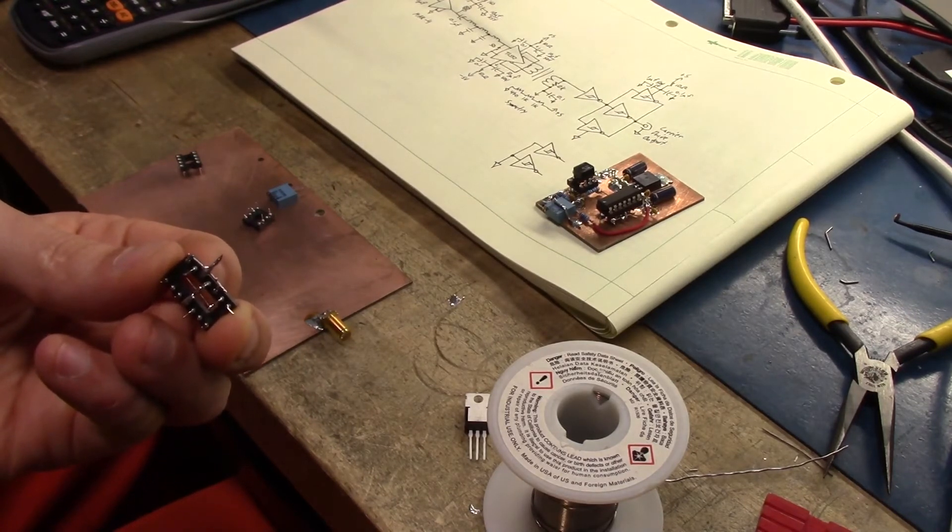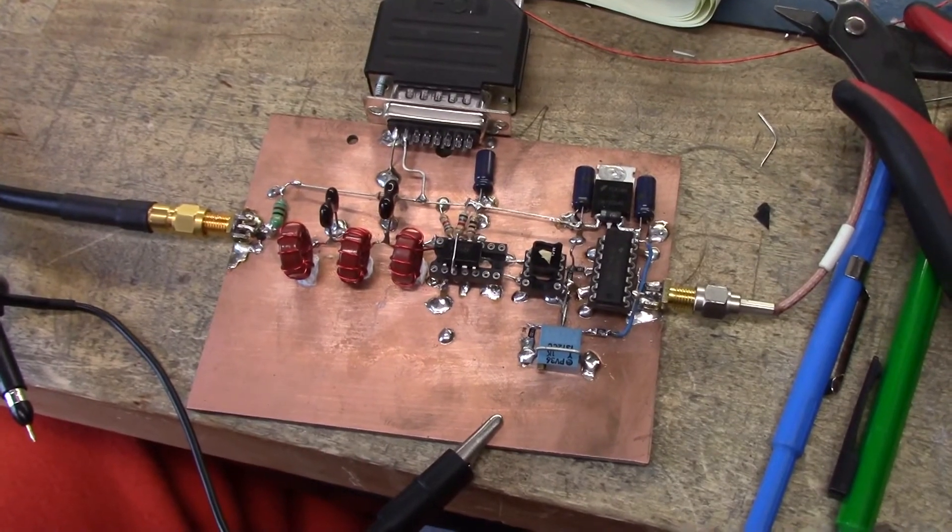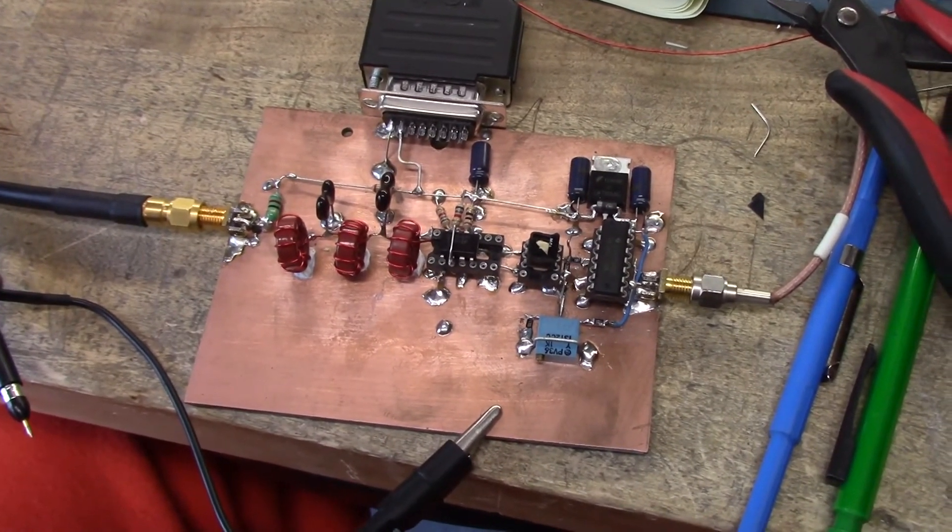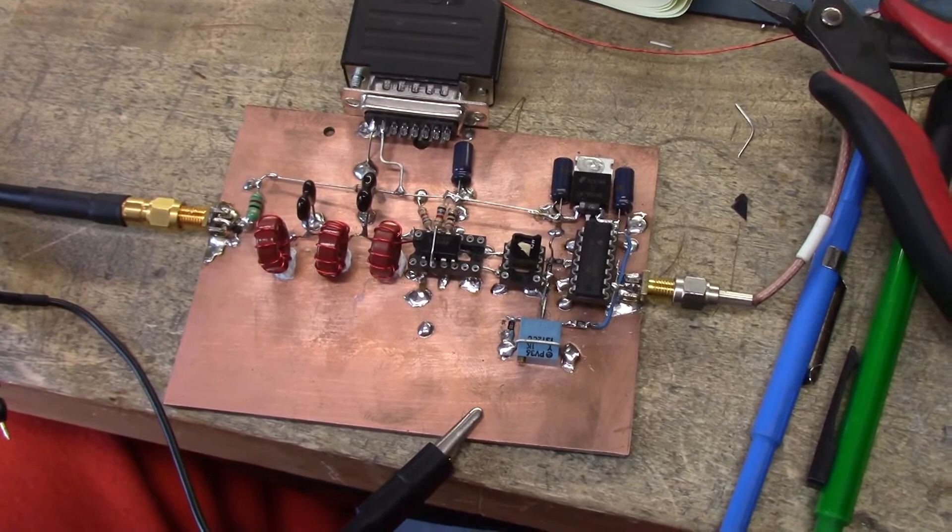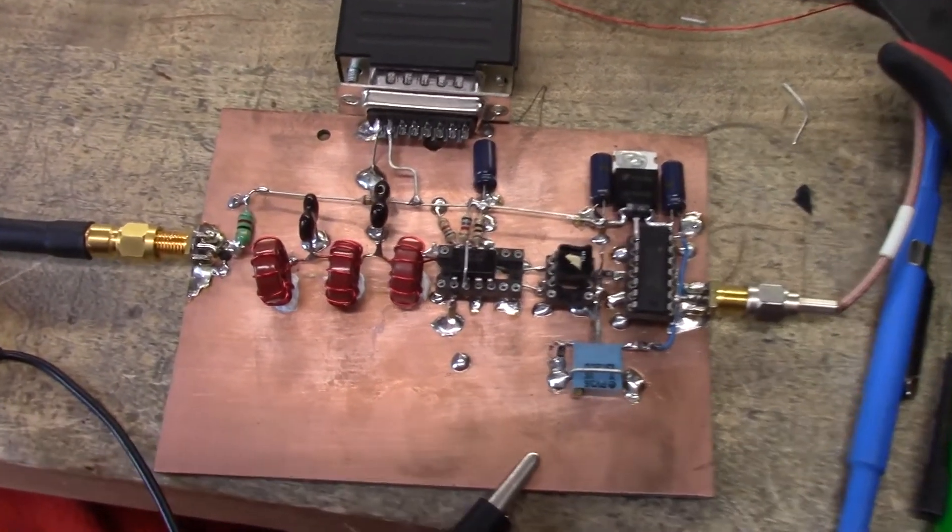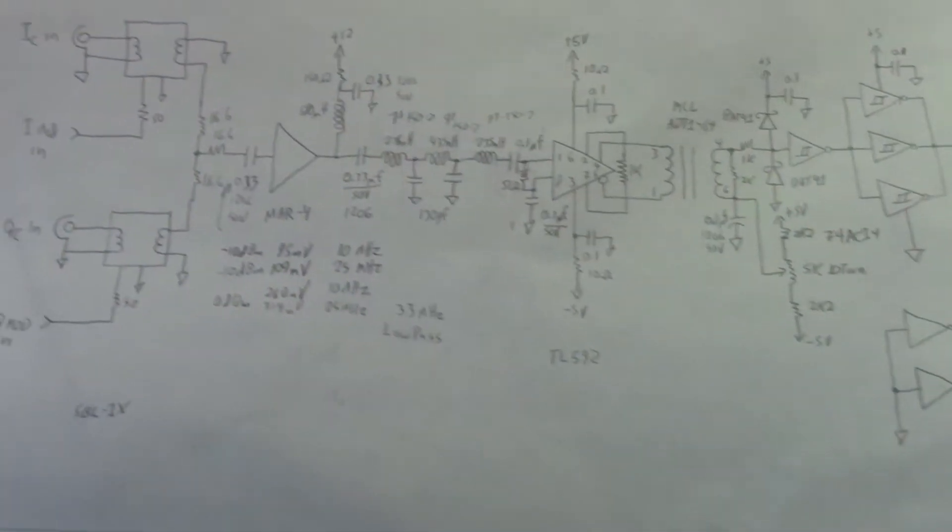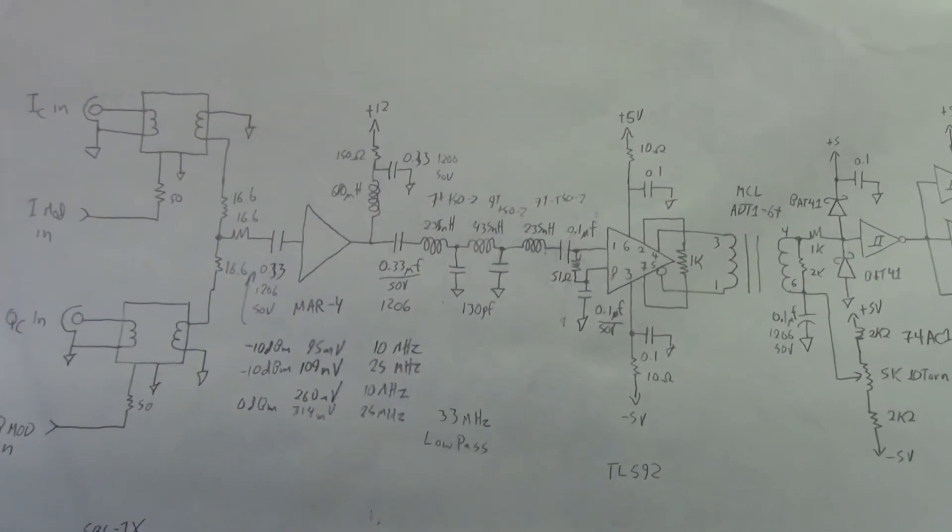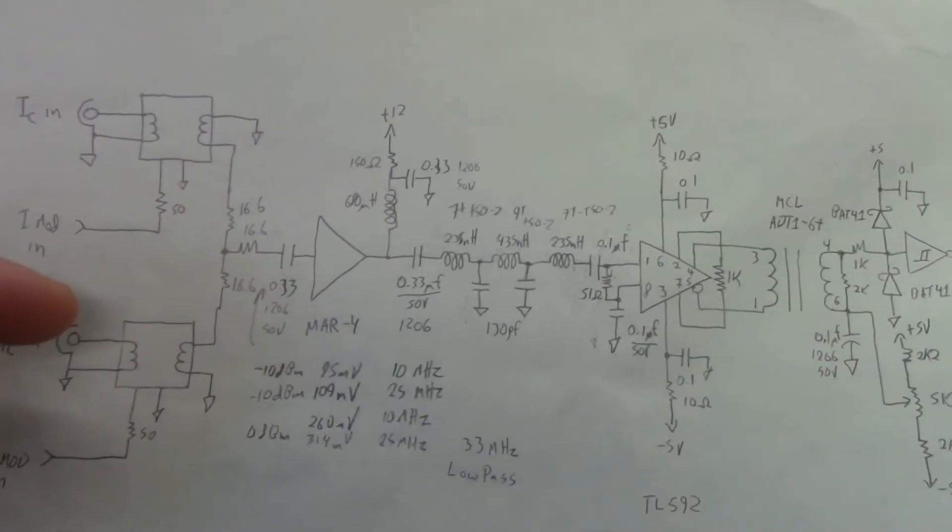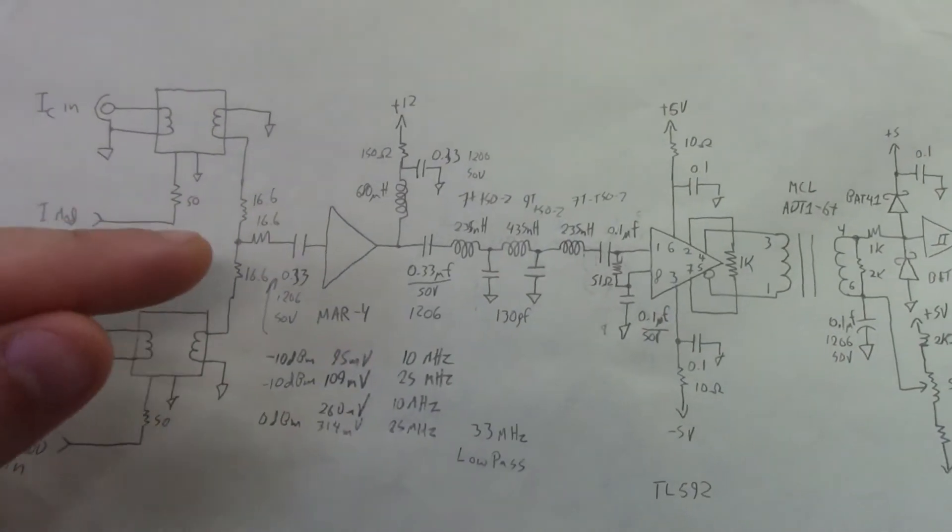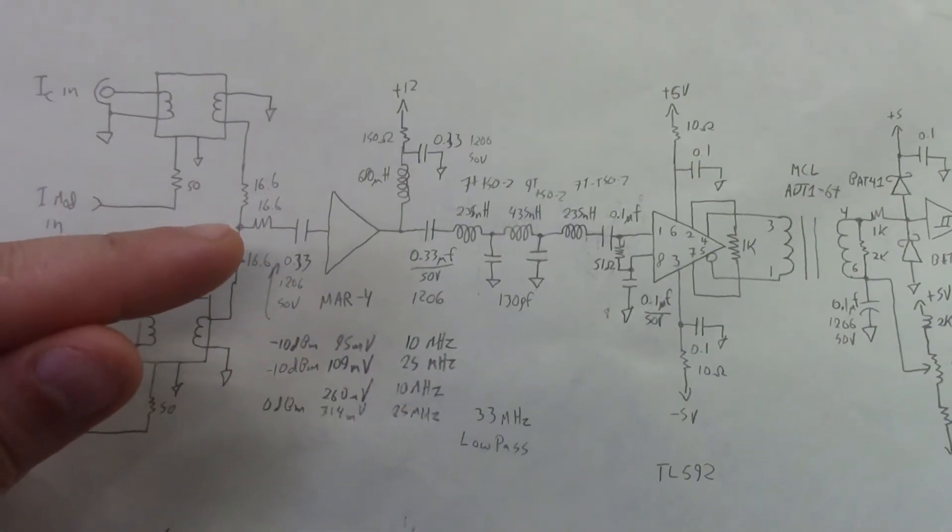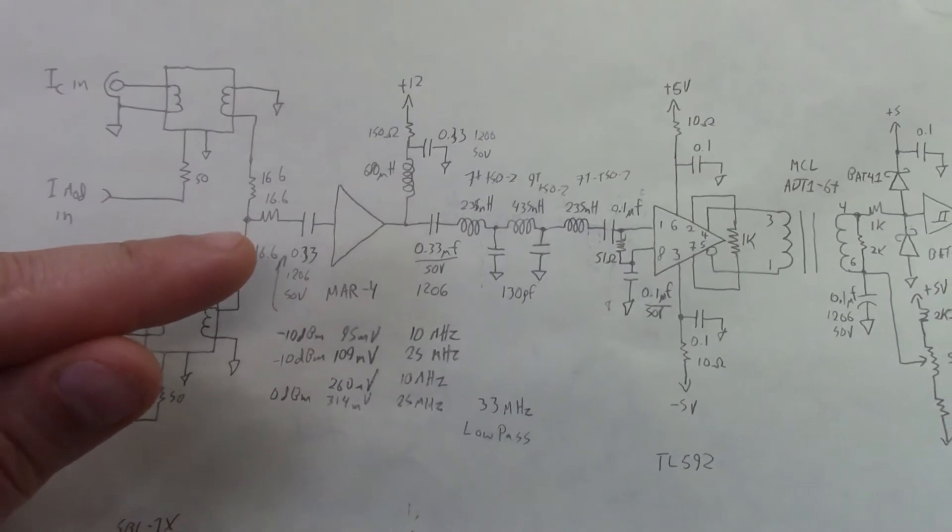After several hours of screwing around, this is the circuit as it's constructed. Referring to the original schematic, the signal comes in. For this purpose of discussion, we've eliminated the two modulators and we're just feeding a signal generator input into the input of the first amplifier, which is an MAR4.